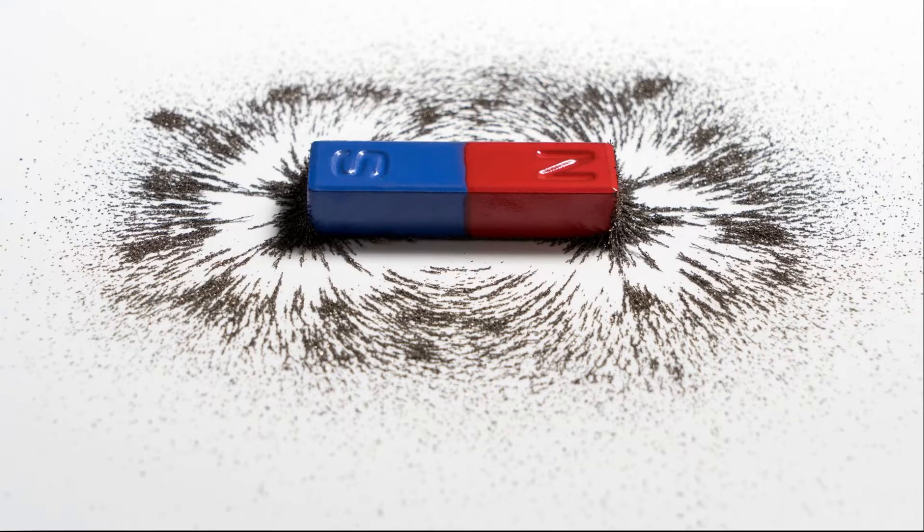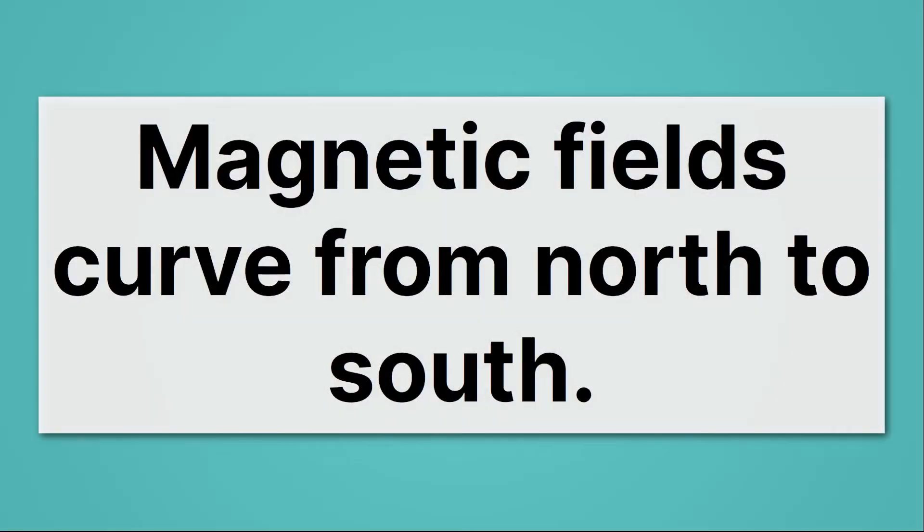We can picture the magnetic fields by using these iron filings around a magnet. The direction or orientation of those filings tells us the direction of the magnetic field. And how many filings are present tell us the strength of that magnetic field. So you notice that magnetic field is strongest right at the north and south pole. And that the magnetic filings in between north and south kind of curve. And that's what they do. Magnetic fields curve from north to south.